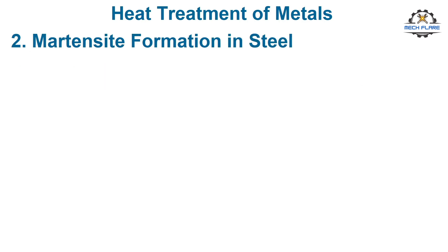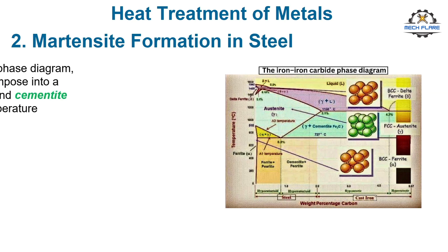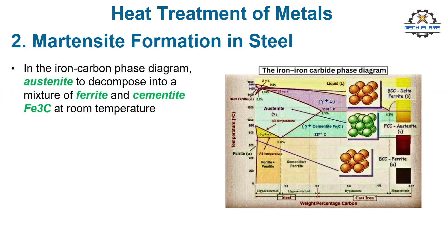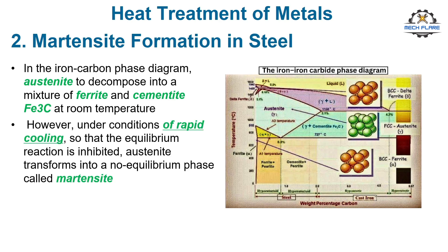The iron-carbon phase diagram indicates the phases of iron and iron carbide present under equilibrium conditions. It assumes that cooling from high temperatures is slow enough to permit austenite to decompose into a mixture of ferrite and cementite (Fe3C) at room temperature. This decomposition reaction requires diffusion and other processes that depend on time and temperature. However, under conditions of rapid cooling — so that the equilibrium reaction is inhibited — austenite transforms into a non-equilibrium phase called martensite.